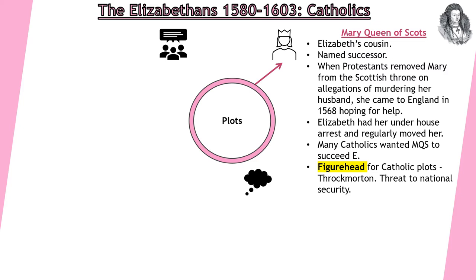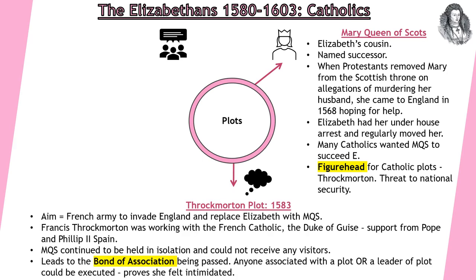We're going to look at the Throckmorton and the Babington Plot as threats to national security. The Throckmorton Plot of 1583: the aim is for the French army to invade England and replace Elizabeth with Mary Queen of Scots. It's devised by a man called Francis Throckmorton, working with the French Catholic the Duke of Guise. Importantly, they have support from not only the Pope but Philip II of Spain. Mary Queen of Scots continued to be held in isolation and could not receive any visitors following the upheaval of this plan. It is unsuccessful — it is found out by Walsingham and his spies — but it leads to something called the Bonds of Association, where anyone associated with a plot or leader of a plot could be executed.